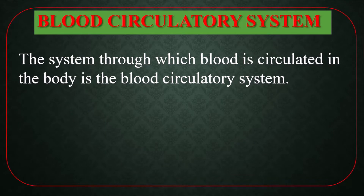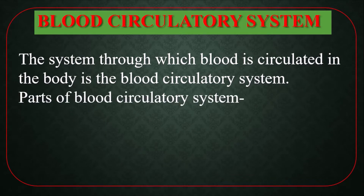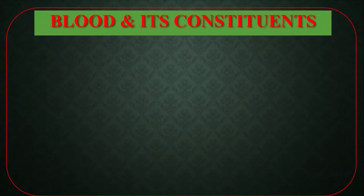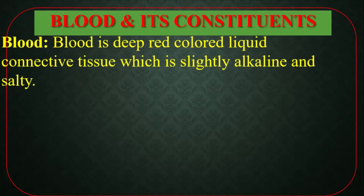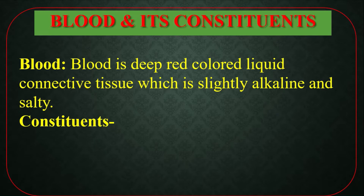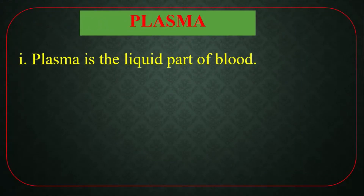The blood circulatory system is the system through which blood is circulated in the body. Parts of the blood circulatory system: number one, blood; number two, heart; number three, blood vessels. Blood is a red colored liquid connective tissue which is slightly alkaline and salty.